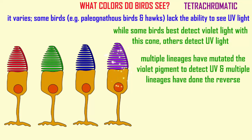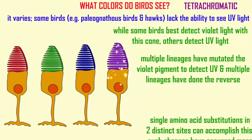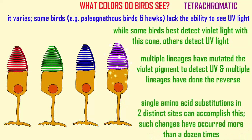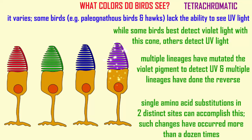To change a violet pigment to an ultraviolet one, this has happened about a dozen times, in different lineages of birds — a mutation changing the violet pigment to an ultraviolet one.